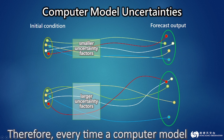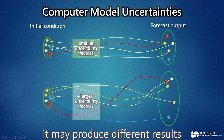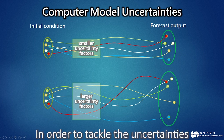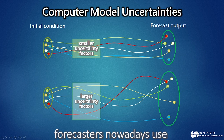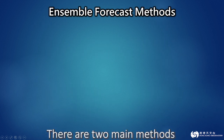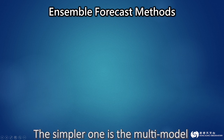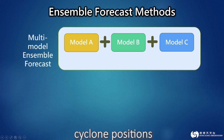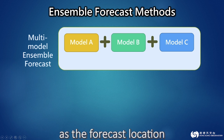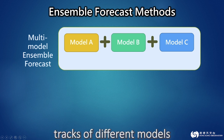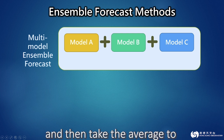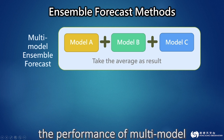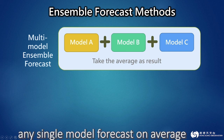Therefore, every time a computer model predicts the weather for the next few days, it may produce different results. So how do forecasters choose the model for their forecasts? In order to tackle the uncertainties, forecasters nowadays use ensemble forecast methods. The simpler one is the multi-model ensemble forecast, which uses the average of the predicted tropical cyclone positions from several different models, or sets weighting on forecast tracks based on past performance, and then takes the average to obtain a more reliable forecast. According to past verification results, the performance of multi-model ensemble forecast is better than any single model forecast on average.